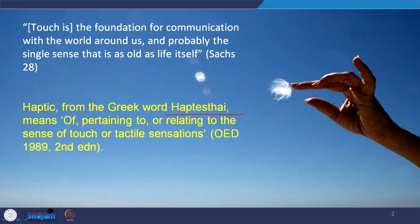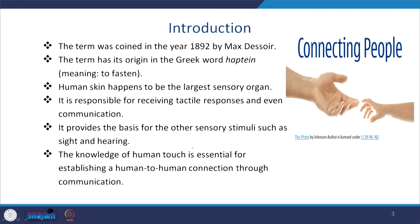Haptics comes from the Greek word 'haptesthai,' which according to the Oxford English Dictionary means 'of or pertaining or relating to the sense of touch' — tactile being the other name that includes touch. This term haptics was coined in the year 1892 by Max Dessoir. The word comes from the Greek 'haptein,' which actually means to fasten, to touch. Human skin happens to be the largest sensory organ.